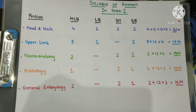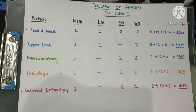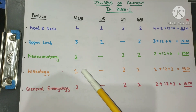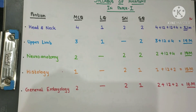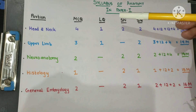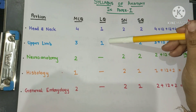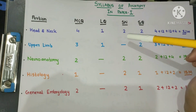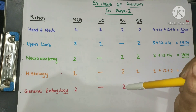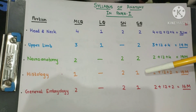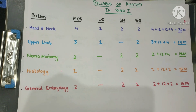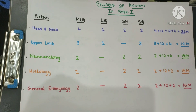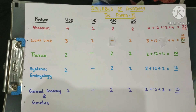From upper limb: 3 MCQ. Neuroanatomy: 2 MCQ. Histology: 1 MCQ. General embryology: 2 MCQ. LQ will be from head and neck and upper limb in paper one. Short notes will be from upper limb, neuroanatomy, histology, and general embryology. You can take a screenshot and look at the weightage for each portion being asked in paper one.